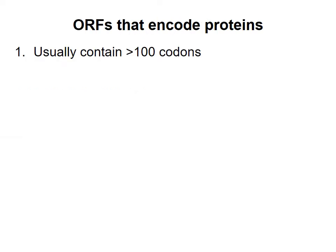First, most proteins are at least 100 amino acids long. Further, if we assume a random and equal distribution of bases, the odds of a stop codon appearing in any random 100 codon stretch of a DNA reading frame is over 99%. Therefore, the longer a possible open reading frame extends without a stop codon, the more likely it is that the open reading frame encodes a protein.